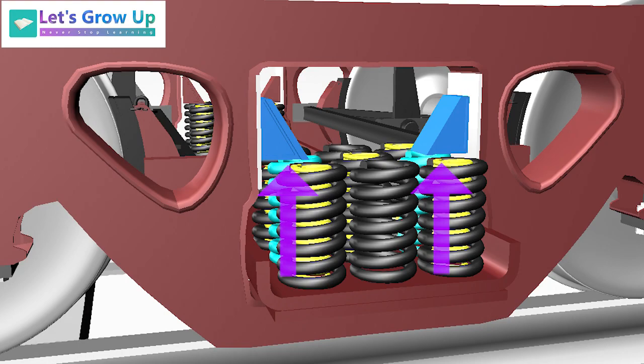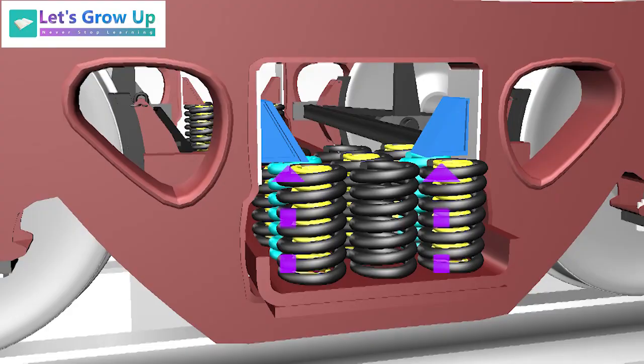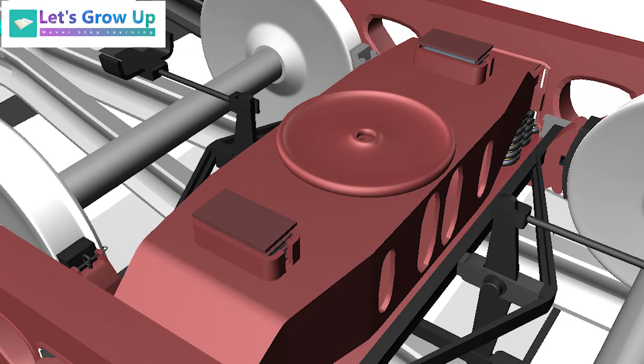The load from the wagon is transferred to the bolster through the central pivot, which is provided at the center of the bolster. The springs are provided to transfer the load from the bolster to the side frame.